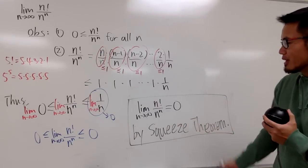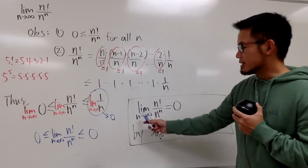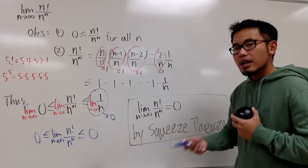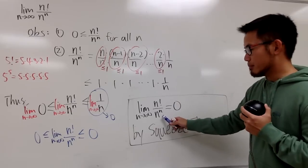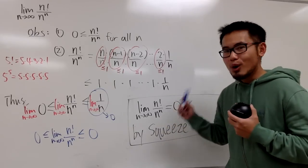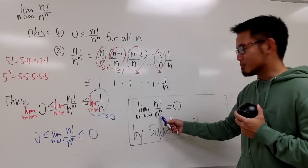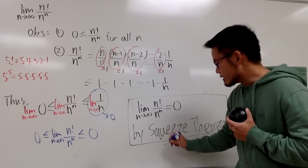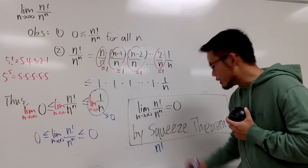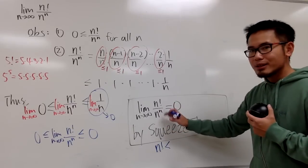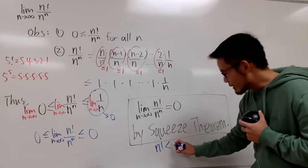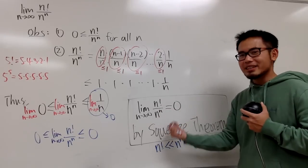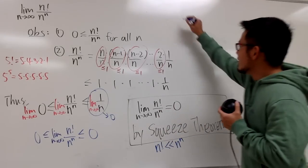Before we go, let me tell you what we can get out of this computation. The fact that the limit of n!/n^n equals 0 tells us that the top is not just smaller than the bottom — n factorial is a lot, a lot, a lot smaller than n to the n. In other words, n! grows much more slowly than n^n.